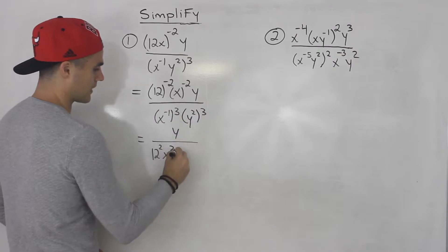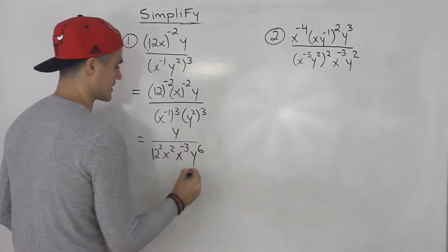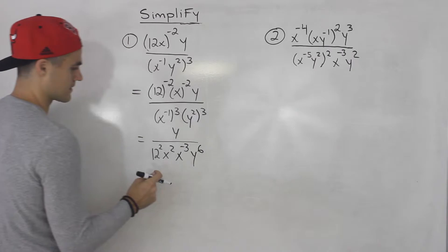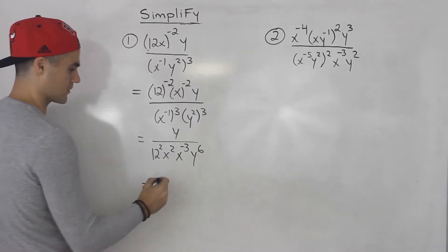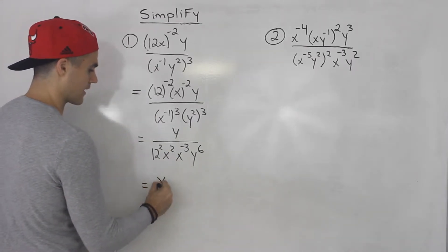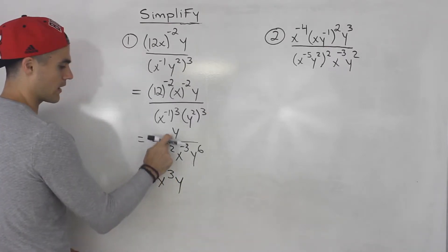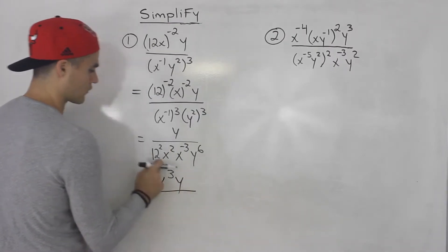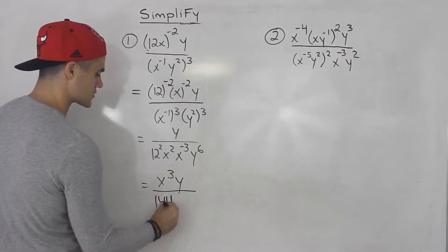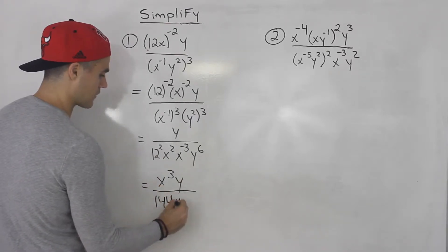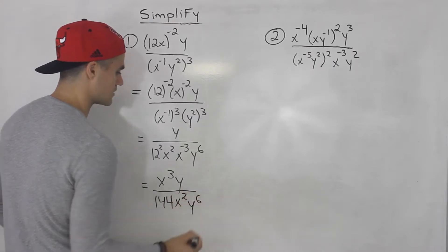Here we multiply exponents — so this would be x to the negative three, and this would be y to the six. Then this x to the negative three I'm going to bring up because it's a negative exponent. So I'll have x cubed and y up top, all over — now 12 squared is 144 — and then we have x squared y to the six.